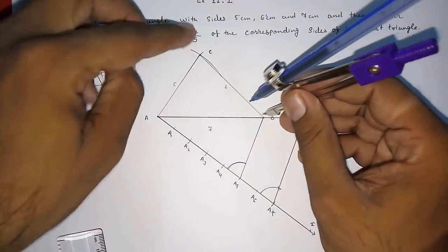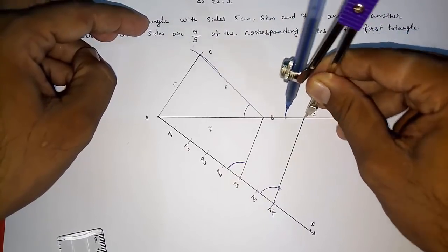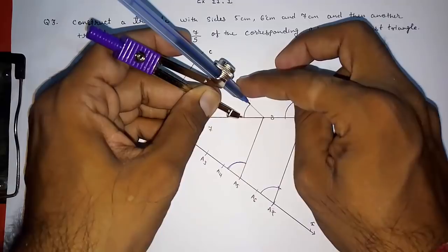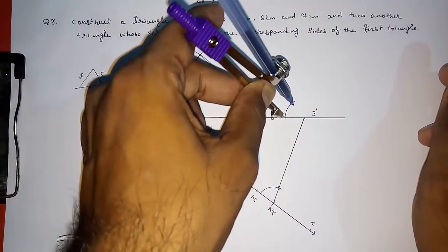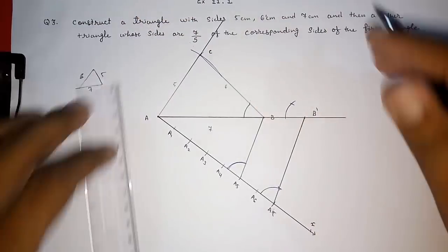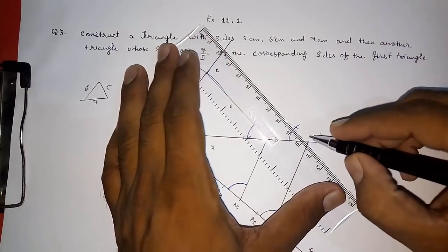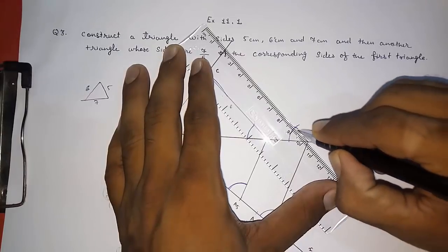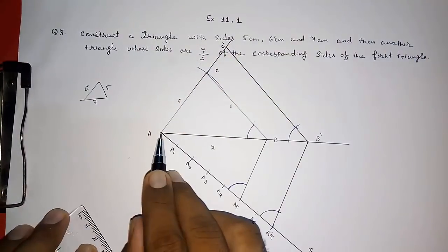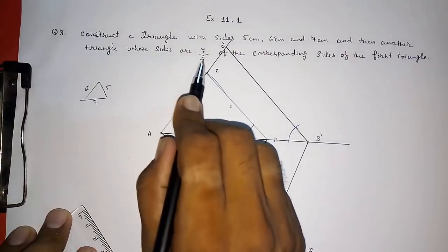Now again we have to draw a line parallel to BC from B dash, using corresponding angles. I extend the line and draw arcs with the same measurement at corresponding points. Somewhere it will intersect — you can see it is parallel to BC — and we give that intersection point the name C dash. So now triangle AB'C' is our required triangle, which is the 7-part triangle, and triangle ABC was our 5-part triangle.